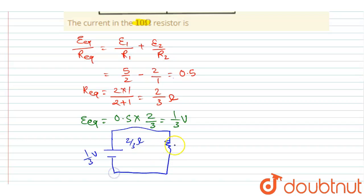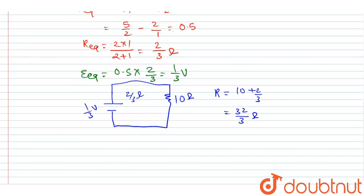Now you can simply see the total resistance of the circuit is 10 + 2/3, that is 32/3Ω. We got the resistance, we got the EMF, now we can simply solve this.